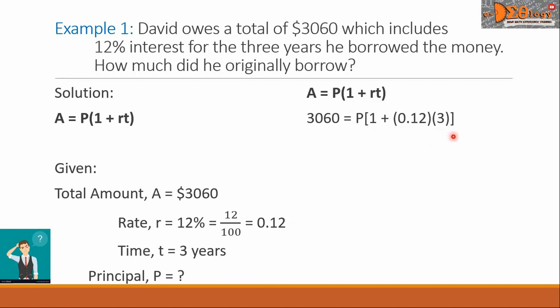In here, let us first simplify the product, 0.12, and 3, we will get the 0.36. We will get the sum of 1 plus the 0.36, and then we will have this 1.36.